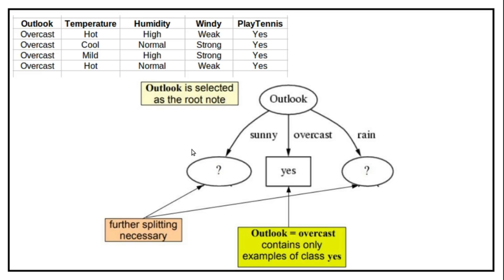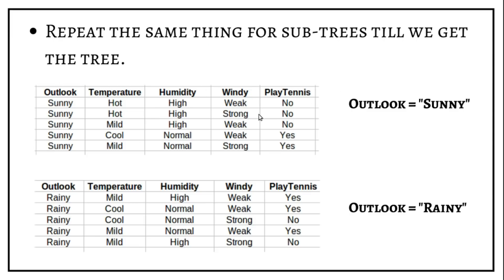So how does our decision tree look now? We have a root node as outlook, and outlook has three decision rules: sunny, overcast, and rainy. For overcast, all the values are yes, so we can directly make a leaf node — it doesn't require any further splitting. But for sunny and rainy, the values are variable, so we cannot yet say whether they give yes or no. Thus we have to do further splitting for both sunny and rainy.